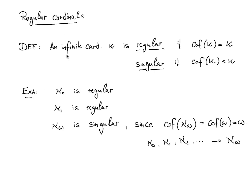We can now make precise what it means for a cardinal to be hard to reach from below. An infinite cardinal κ is regular if its cofinality equals itself — we cannot reach it from below by a sequence shorter than itself. Otherwise it is called singular. Linking back to our motivating examples, ℵ₀ and ℵ₁ are regular, but ℵ_ω is singular since cf(ℵ_ω) = cf(ω) = ω, as witnessed by the sequence ℵ₀, ℵ₁, ℵ₂, ....